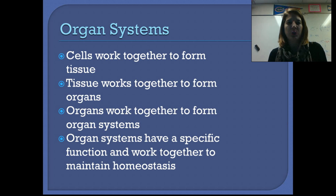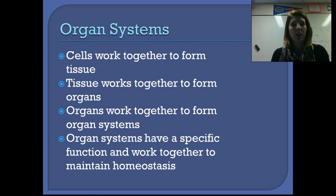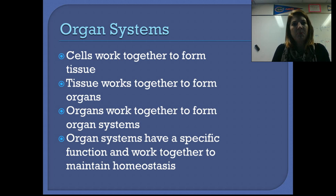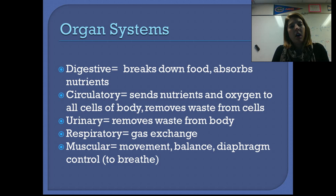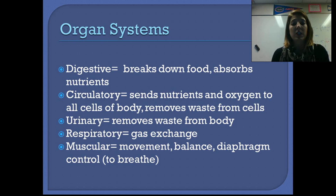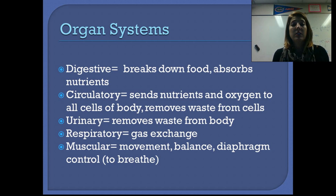These macromolecules come together to form cells. Cells that work together to perform a function are called tissue. Tissue that works together forms an organ, and organs that work together form an organ system. You have several organ systems in your body, all working together to perform specific functions that help you stay alive. Your digestive system is responsible for breaking down your food and absorbing nutrients. Your circulatory system is responsible for sending nutrients and oxygen to all the cells of your body — it's made up of your blood, blood vessels, and heart — and it also helps remove waste from the cells.